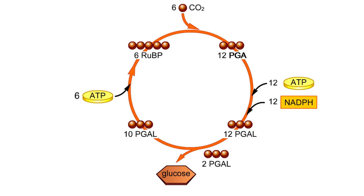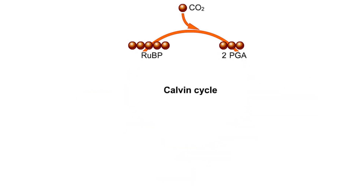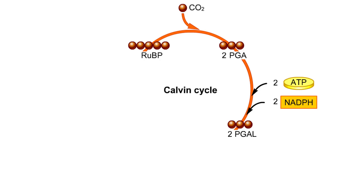The light-independent reactions make sugars by way of a cyclic pathway called the Calvin cycle. The cycle begins when Rubisco attaches a carbon from carbon dioxide to ribulose bisphosphate. The molecule that forms splits into two molecules of PGA. Each PGA gets a phosphate group from ATP and electrons from NADPH.